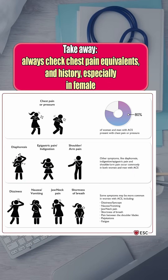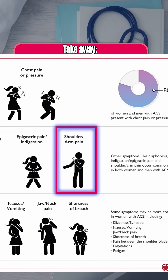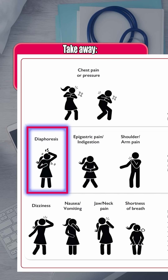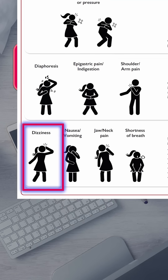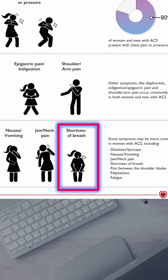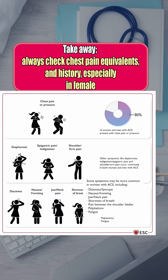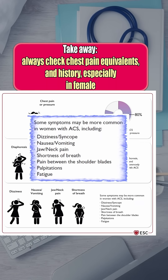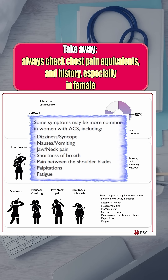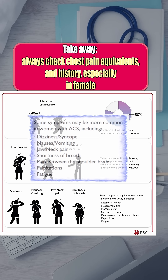Remember, acute coronary syndrome doesn't always mean chest pain. It can present as shoulder pain, excessive sweating, indigestion, dizziness, or shortness of breath — especially in women. So would you have guessed the right coronary artery clot from just a shoulder pain?